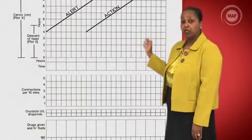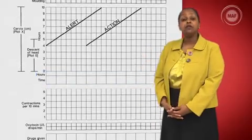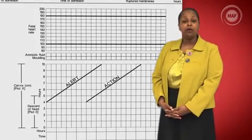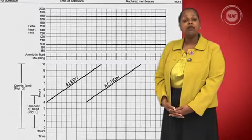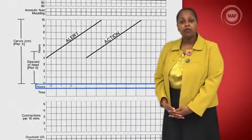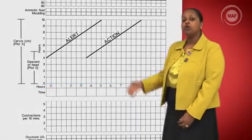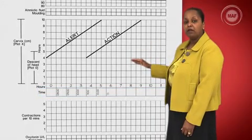The partograph section marked hours refers to the time elapsed since onset of the active phase of labor. The graph allows for quarter-hourly recordings of fetal heart and other vital signs, which may be recorded within the boxes. The hours should line up with other required information. You should record actual time sideways along the left-hand line of the time boxes.